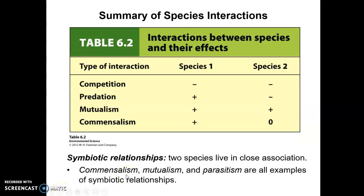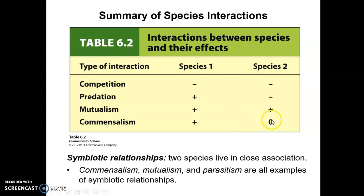This is just a table which summarizes the different types of interactions between species as to whether one or both species can benefit or be harmed. If it's neutral, there's a zero shown.